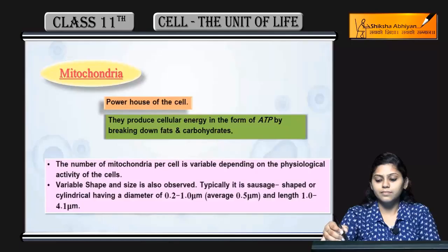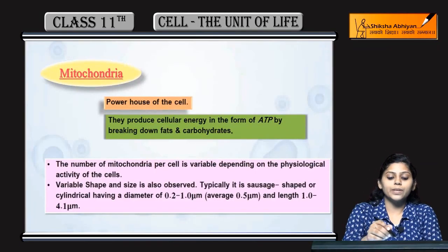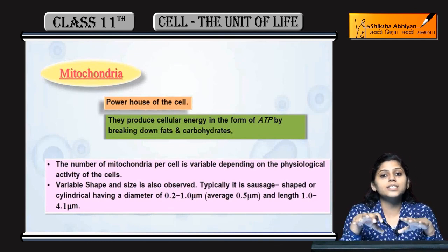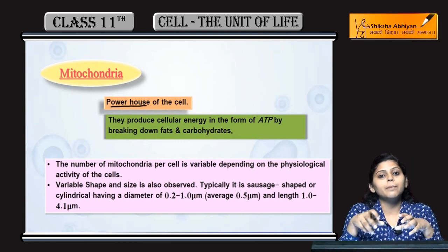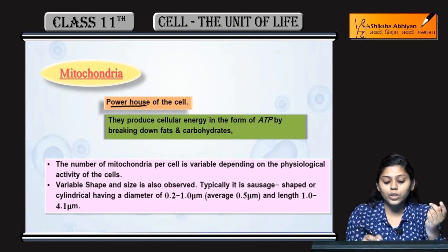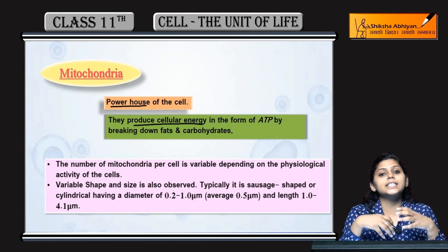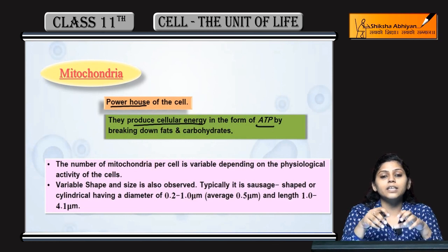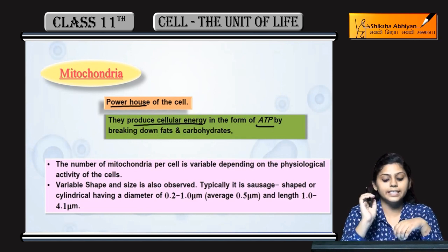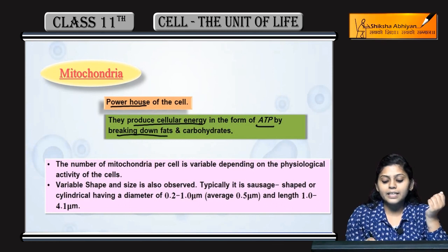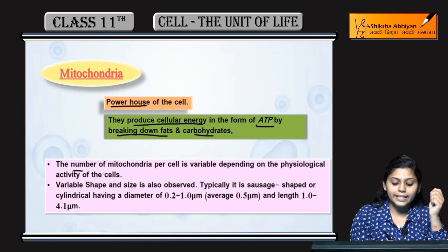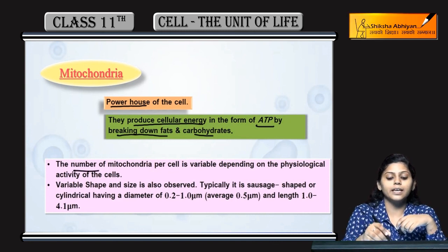Next topic is mitochondria. Mitochondria kya hota hai? Use cell ka powerhouse bolte hai. Powerhouse kyun bolte hai? Because ye produce karta hai cellular energy - energy ki form mein ATP ki form mein. ATP is known as the energy currency of the cell, by breaking down fats and carbohydrates.